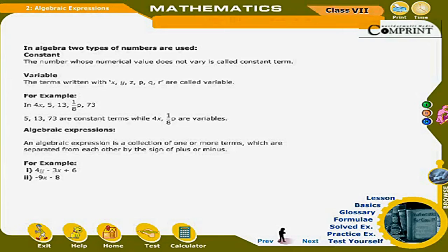Algebraic Expressions: An algebraic expression is a collection of one or more terms which are separated from each other by the sign of plus or minus. For example: 4y − 3x + 6 and −9x − 8.